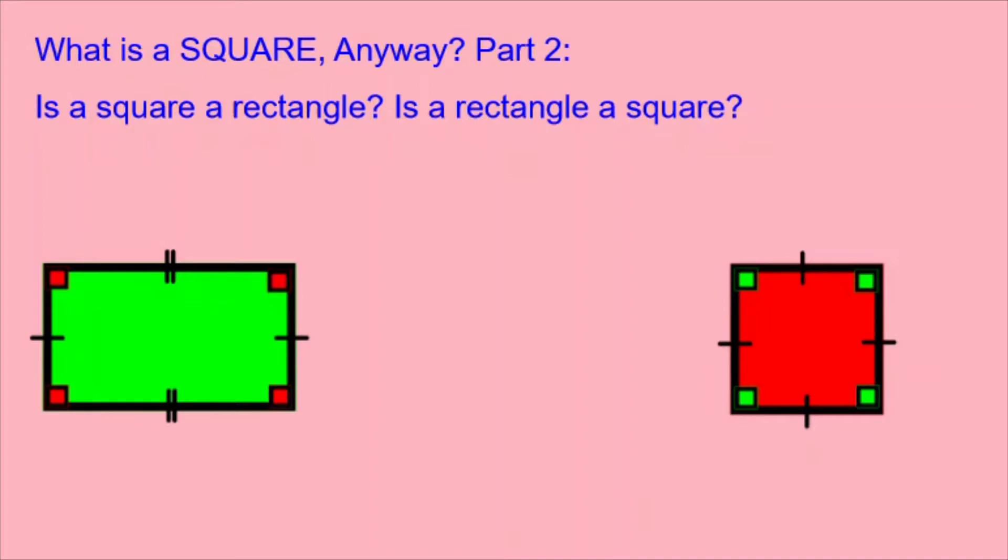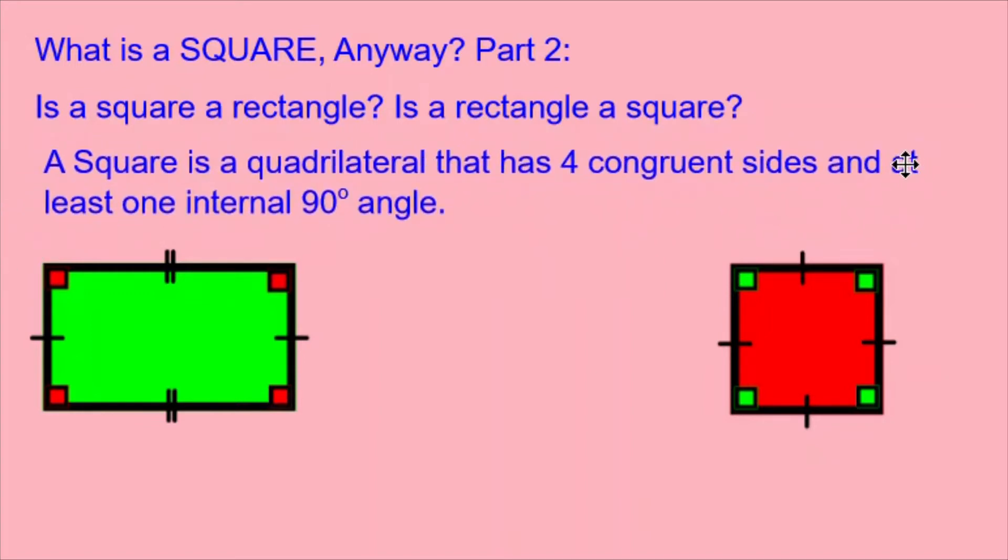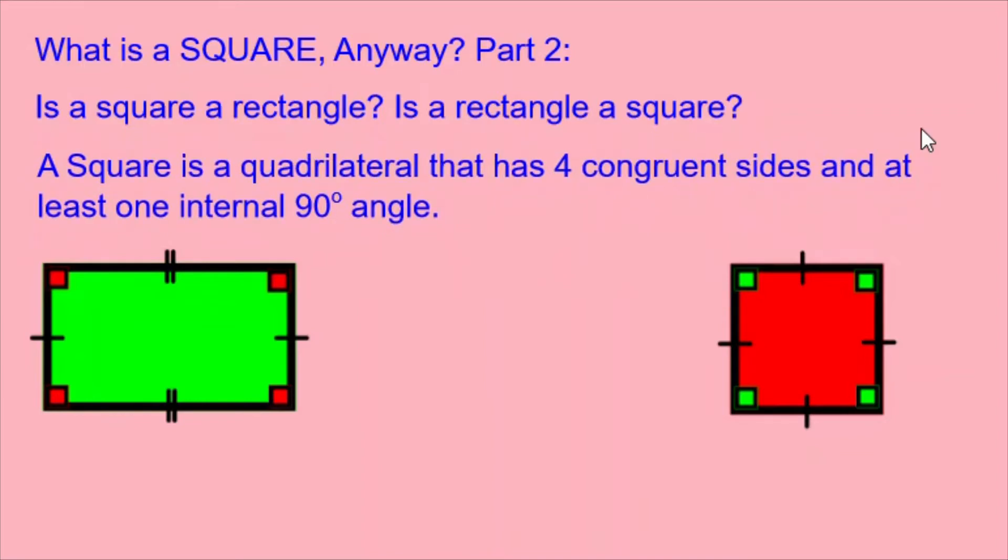Well, the answer is going to be yes and no. Let's look at the definition of a square first. A square is a quadrilateral that has four congruent sides and at least one internal 90 degree angle.